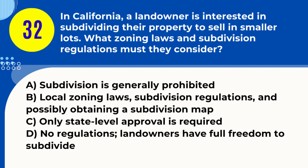Question 32. In California, a landowner is interested in subdividing their property to sell in smaller lots. What zoning laws and subdivision regulations must they consider? A. Subdivision is generally prohibited. B. Local zoning laws, subdivision regulations, and possibly obtaining a subdivision map. C. Only state-level approval is required. D. No regulations; landowners have full freedom to subdivide. Answer: B. Local zoning laws, subdivision regulations, and possibly obtaining a subdivision map. Explanation: Subdividing property in California requires compliance with local zoning laws and subdivision regulations, which may include obtaining a subdivision map.